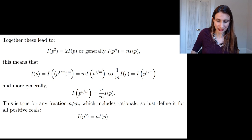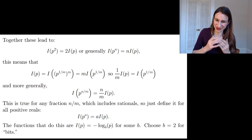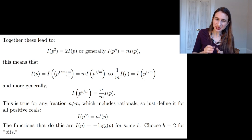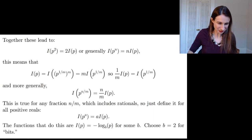This would hold for any n and m, which means it holds for all rationals. So all we have to do is just define the information so that this property holds for all real values. If it's true for all positive reals and it's continuous, then the functions that do this are negative log. And so we still have to choose the base of the log and we chose b equals 2 for bits. So it's bits of information.